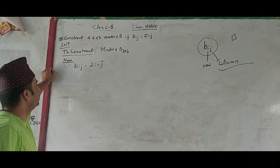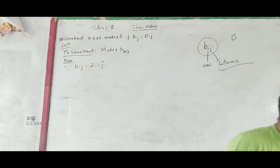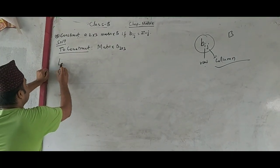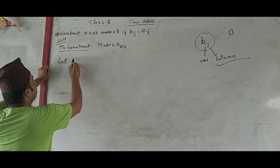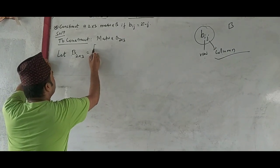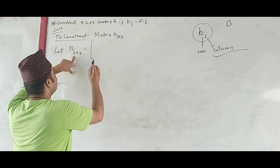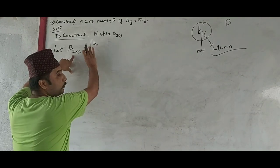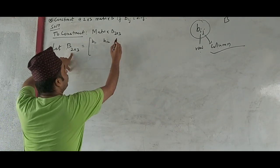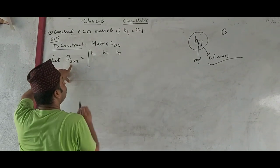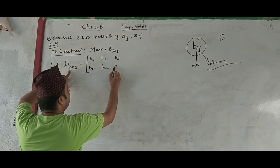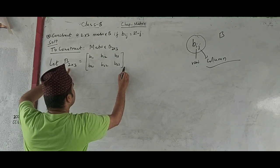Let's make this easier. Let matrix B of order 2 by 3 be set up with 2 rows and 3 columns: B11 is 1st row 1st column, B12 is 1st row 2nd column, B13 is 1st row 3rd column. Next, B21 is 2nd row 1st column, B22 is 2nd row 2nd column, and B23 is 2nd row 3rd column.